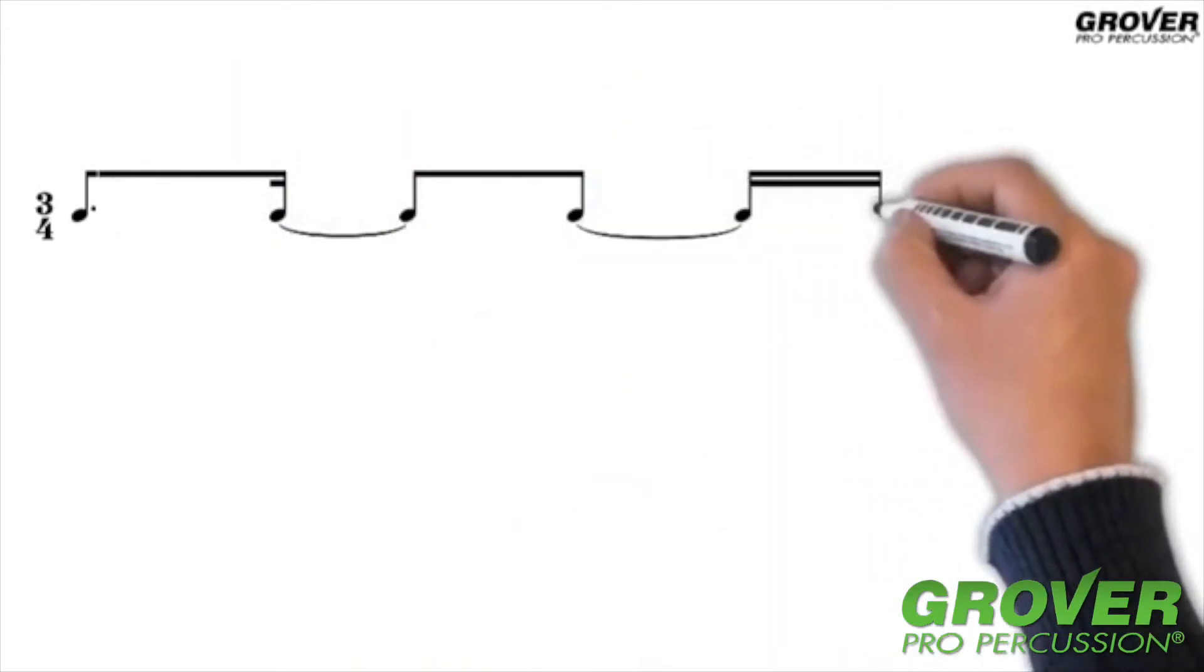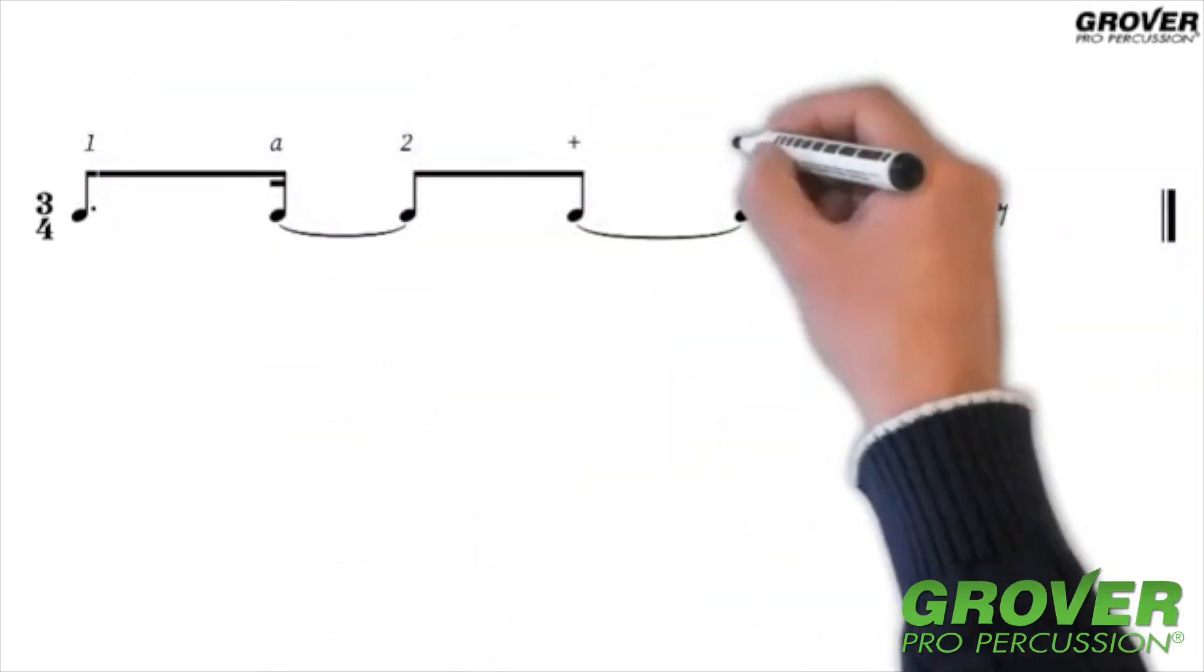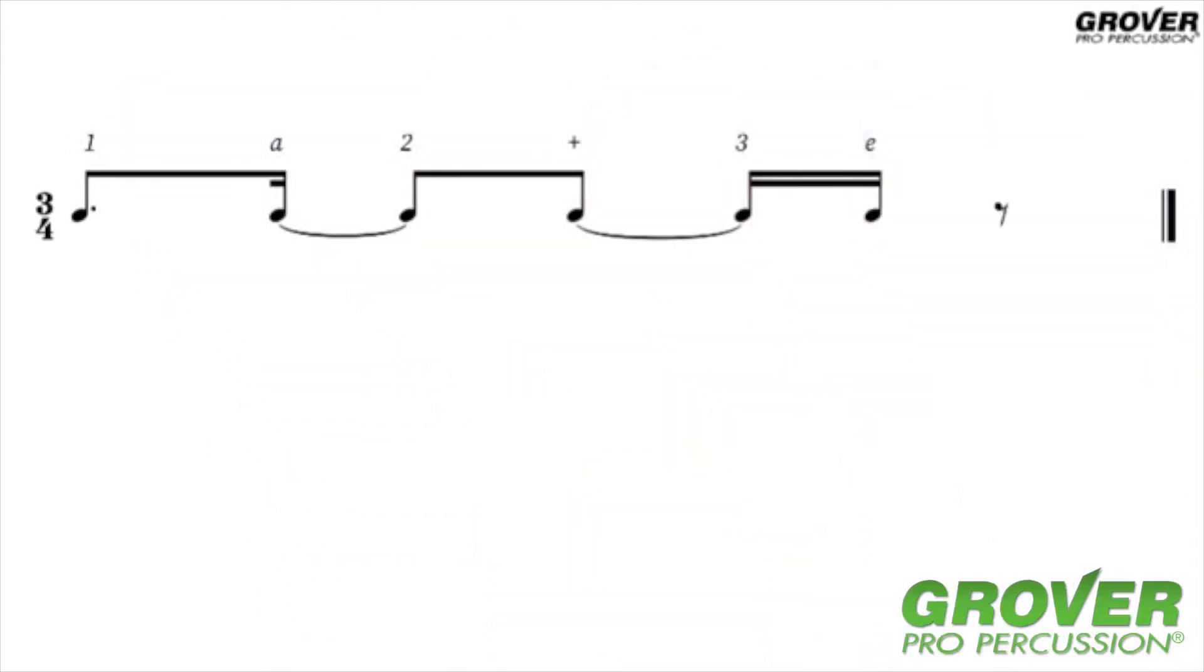Stripping away the sixteenths, we count it this way. 1-e-an, a-2-an, 3-e-an, 1-e-an, a-2-an, 3-e-an.